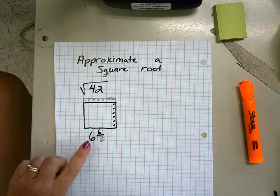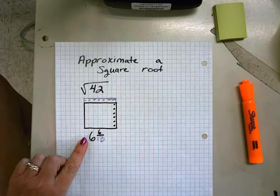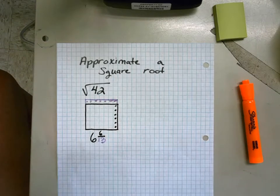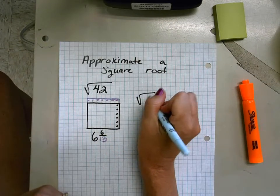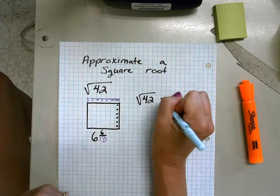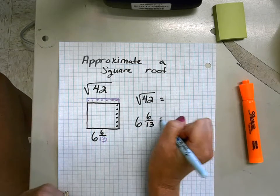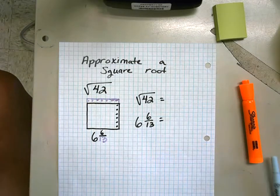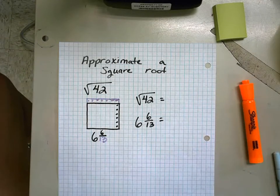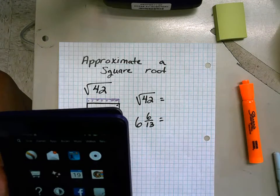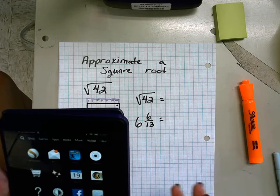Now you don't have to take my word for it. I'm going to go ahead and use the MyScript calculator, and we're going to put both of these numbers into the MyScript calculator and see if we get a pretty close number. The MyScript app, you can get on your phone, you can get on an iPad, I have it on my Kindle. MyScript is great because you can use your finger to write in.